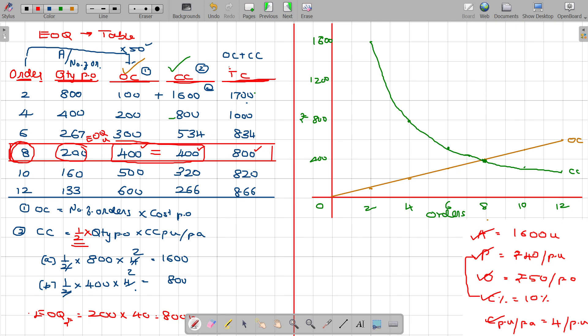Now, total cost will be 1700 at 2 orders, 1000 for 4 orders and 834 for 6 orders, then 800 for 8 orders, then 820, 866. I am connecting these dots, this is total cost.